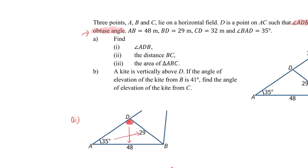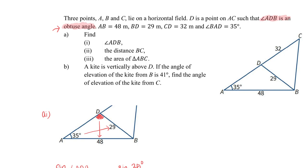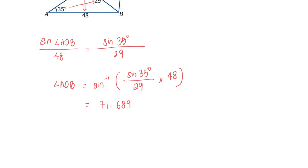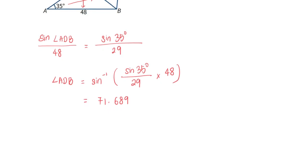The question indicated that angle ADB is an obtuse angle, and therefore it is at this point that we have to revisit the sine ratio of an obtuse angle, which is the same as the sine ratio of an acute angle.